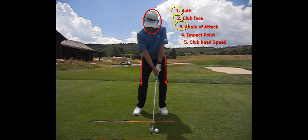Number four, impact point — where do you hit that ball? On the toe, the heel, or in the center of the face? And then lastly, number five, club head speed.